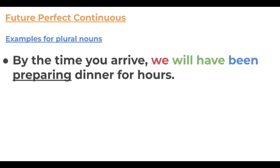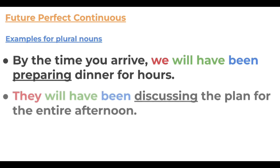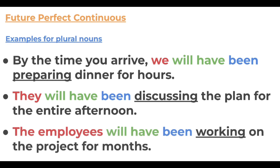With plural nouns: 'By the time you arrive, we will have been preparing dinner for hours.' The 'by the time you arrive' is the event that stops the ongoing action. 'They will have been discussing the plan for the entire afternoon.' 'The employees will have been working on the project for months.' With plural subjects — we, they, the employees — everything else stays the same.